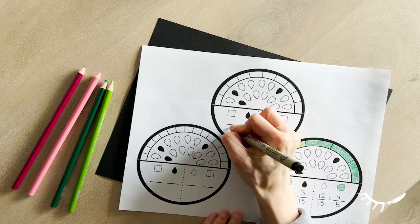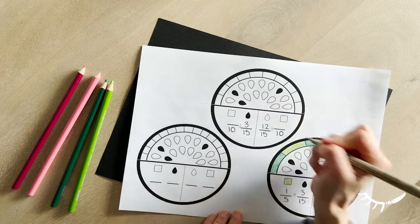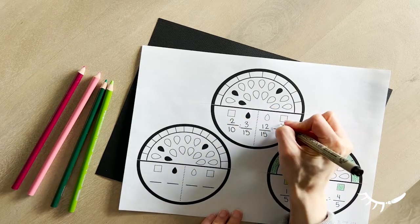Next, color the rind. Again, if the rind is colored in the same spot on each slice, it is helpful in visualizing the equivalent fraction.